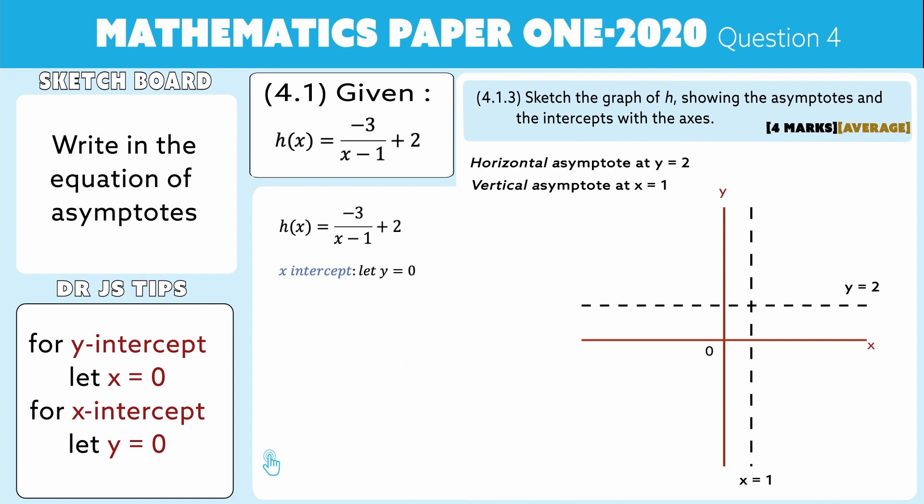Now if y is equal to 0, then we get 0 = -3/(x-1) + 2.